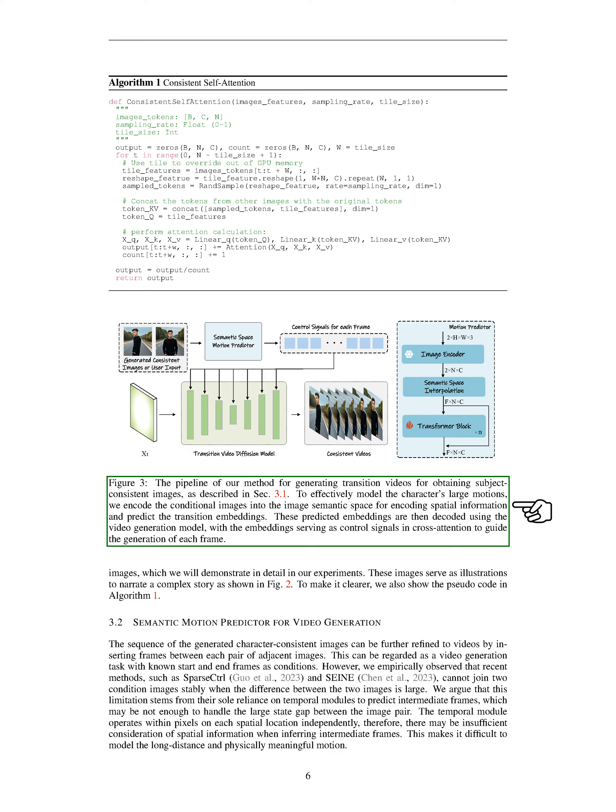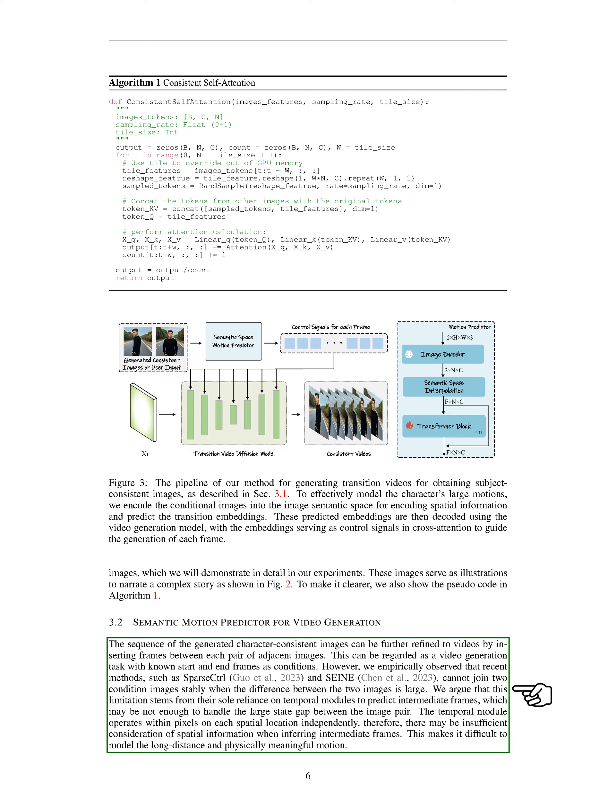In this section, we refined the sequence of character-consistent images to create videos by adding frames between each pair of adjacent images. This process is like generating a video with specific start and end frames. However, we noticed that existing methods like Sparse CTRL and SANE struggle to smoothly connect two condition images when there is a large difference between them. This difficulty arises because these methods rely solely on temporal modules to predict intermediate frames, which may not be sufficient to bridge the gap between the two images. The temporal module works independently on each pixel's spatial location, leading to a lack of consideration for spatial information when predicting intermediate frames. This limitation makes it challenging to capture long-distance and physically meaningful motion accurately.